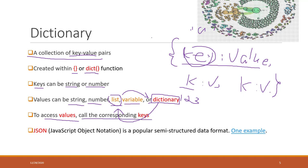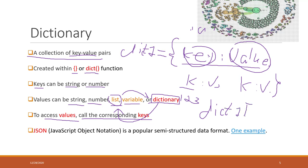To access values, we call the corresponding key. For example, with dictionary_one we call it with square brackets and put the key inside. If the key is a string we need quotation marks; if the key is not a string we don't need quotation marks.